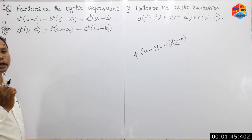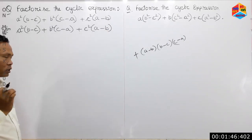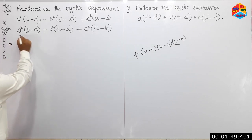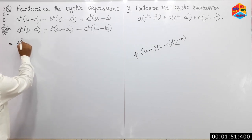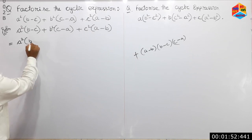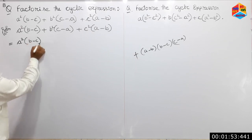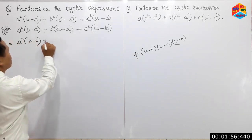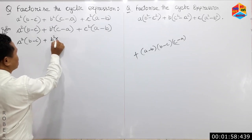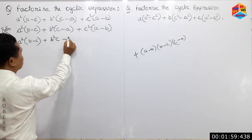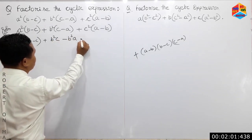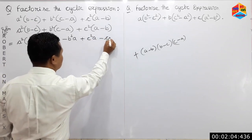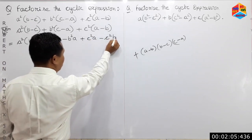Next we are going to arrange this by corresponding ascending and descending powers. This is (b minus c). For c equal to b-squared c, minus b-squared a, plus c-squared a, minus c-squared b.